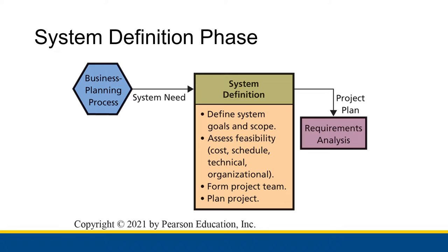The first of these phases is the system definition phase. As soon as there is a recognized need for an information system, we have to define what that system should be. Or once we need to make a change to an existing system, we need to know what it should look like once we are finished. The system definition is going to involve defining the goals and the scope — what the system is going to accomplish once it is working.